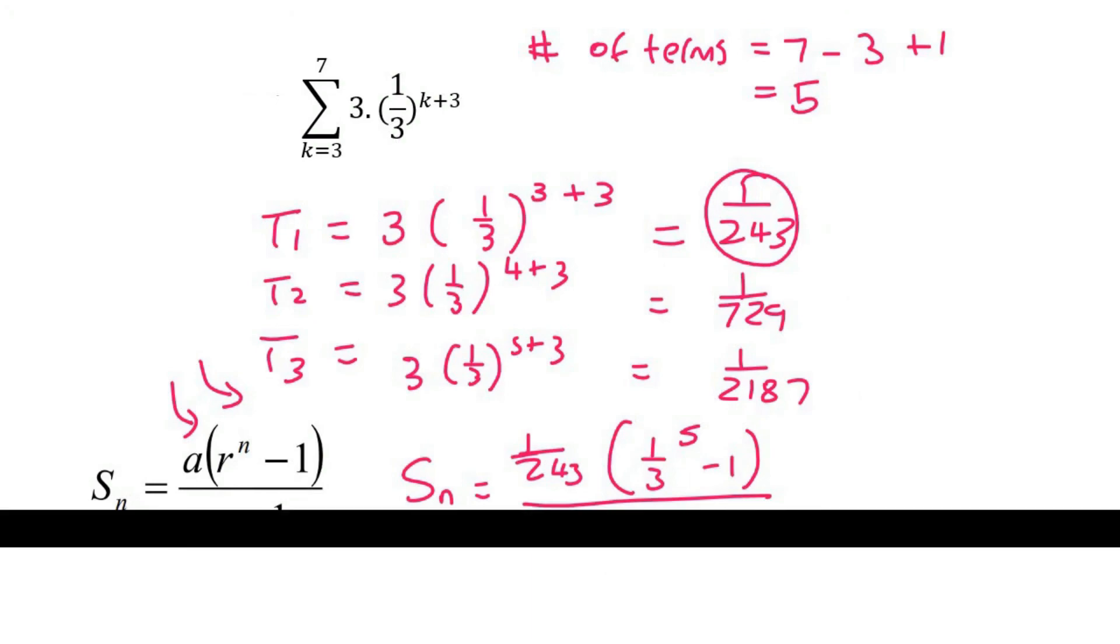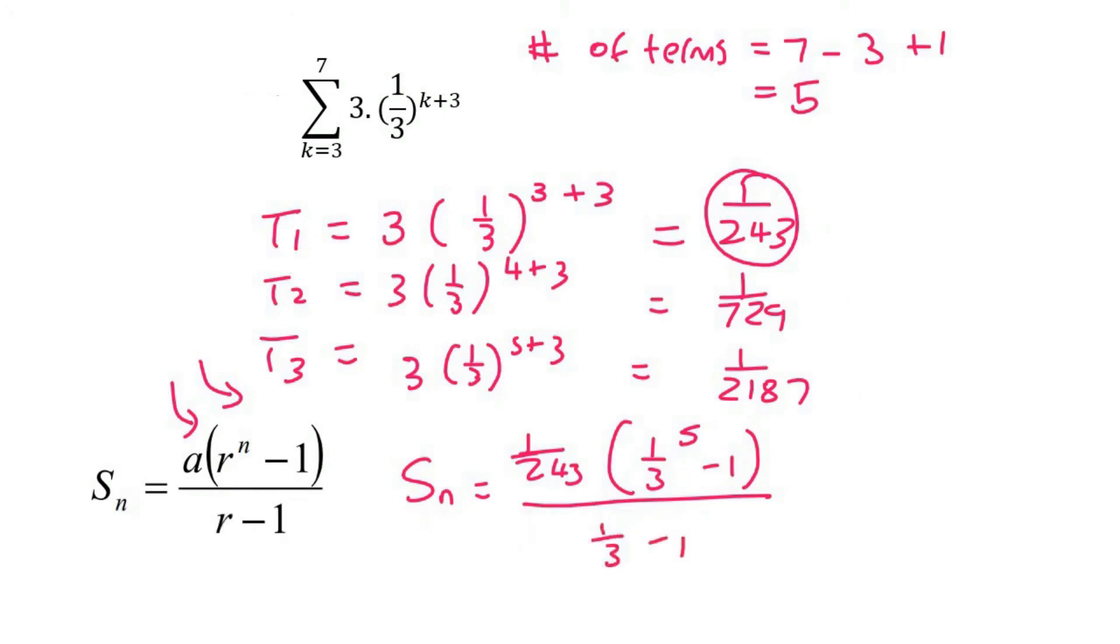And so to two decimal places, this should give us 6 point... It's not a very nice answer. 6.147. Oh no, let's go to 6.15 times 10 to the negative 3.